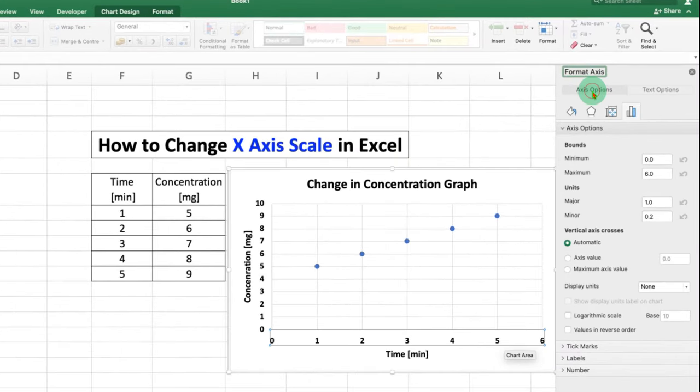Click on the axis options. You will see here two options again, bound and unit.